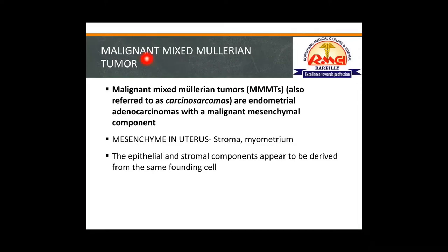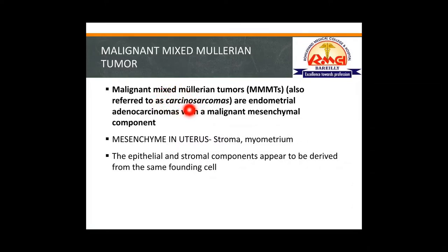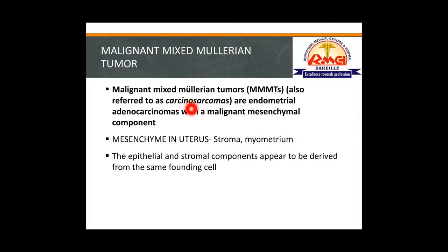Malignant mixed Müllerian tumor, as the name suggests, is a malignant tumor of the uterus which is mixed in nature — it is a carcinosarcoma, having both carcinoma and sarcoma components. Carcinomas arise from malignant epithelial tissue, which lines body cavities and surfaces. Sarcomas arise from mesenchymal tissue — mainly connective tissue composed of smooth muscle cells, skeletal muscle cells, and adipose tissue — which forms the structural framework of the body.